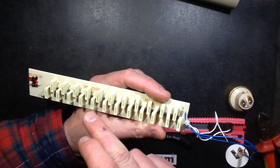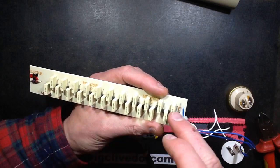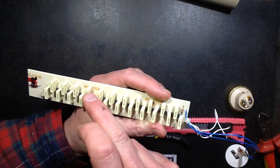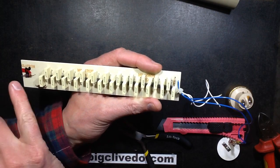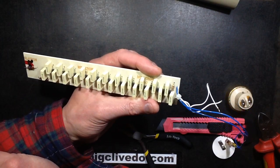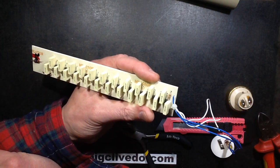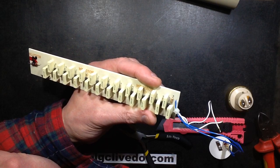Counting the stages: 1, 2, 3, 4, 5, 6, 7, 8, 9, 10, 11, 12 on one side and 1, 2, 3, 4, 5, 6, 7, 8, 9, 10, 11 on the other. So it's actually got one capacitive stage more than the normal 11 and 11 version of this.